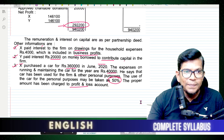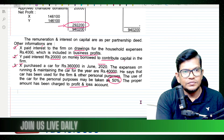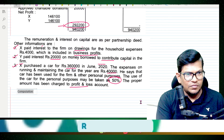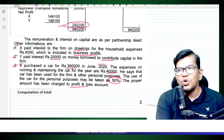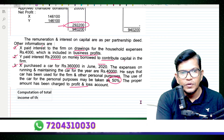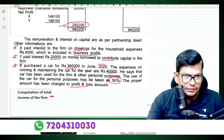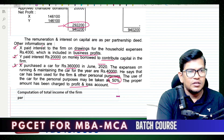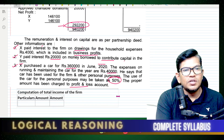Now compute income from business. Computation of total income of the firm. Particulars and amounts are set out as follows.